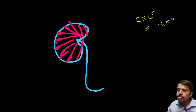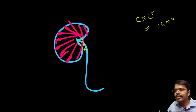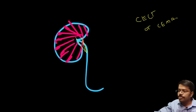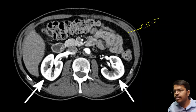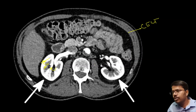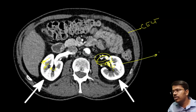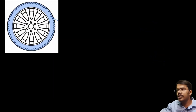Both the cortex and medulla get enhanced and the contrast gets excreted through the collecting system. This is a normal contrast-enhanced CT of the KUB, just to show the normal enhancement of the cortex, subsequently the medulla, then the contrast goes into the excretory system. This is normal enhancement of the kidney.